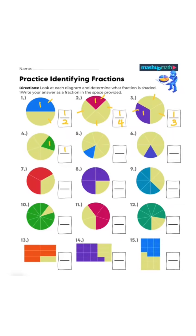One, one two three four five — one fifth. One, one two three four five six seven — one seventh. One, one two three four five six — one sixth. One two — two thirds.